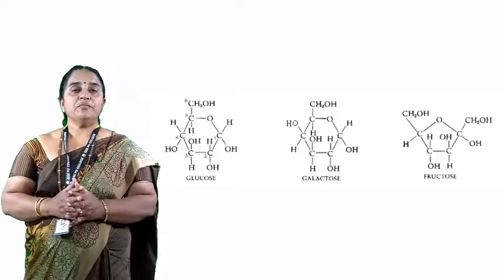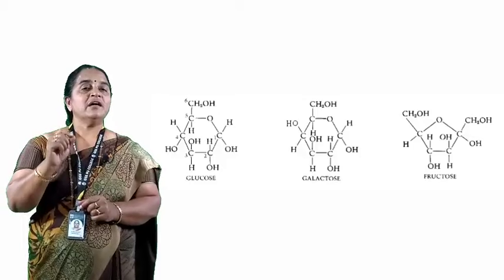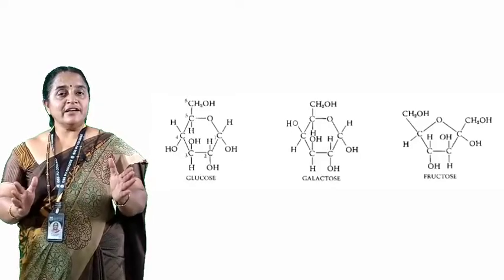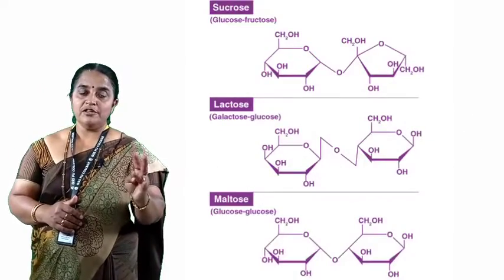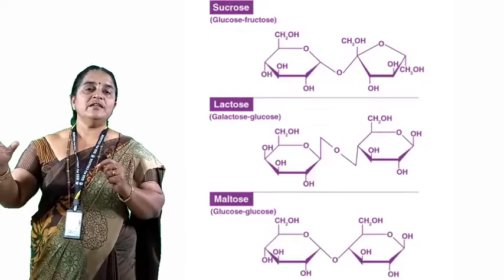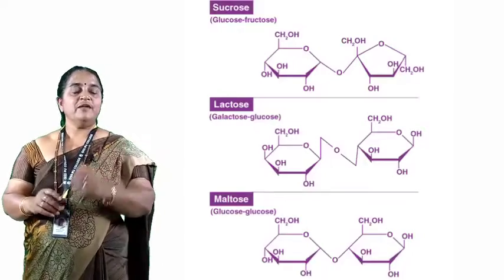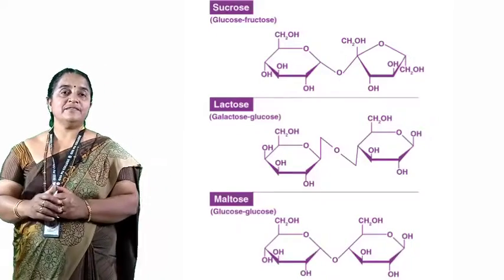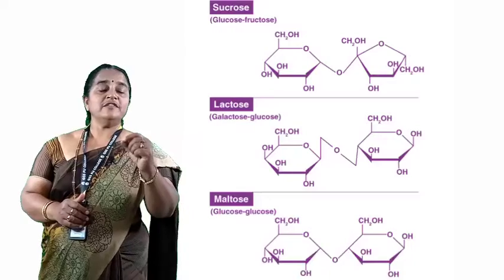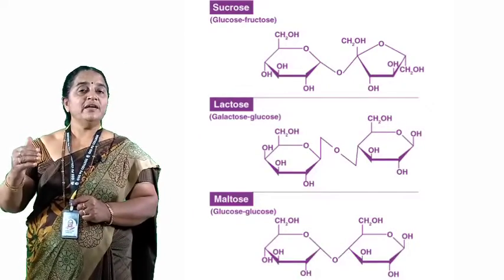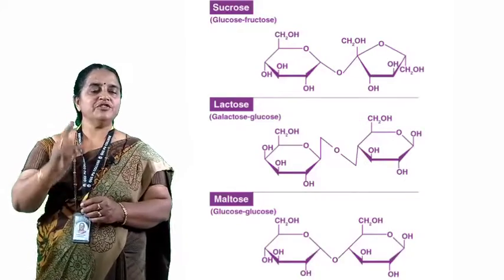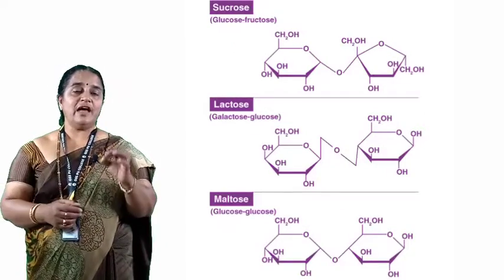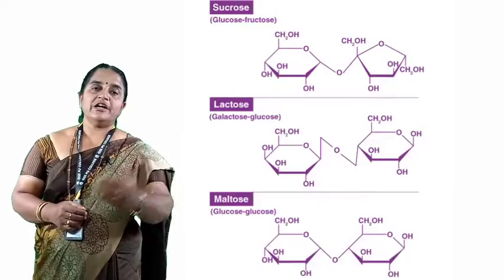Coming to the second group, monosaccharides are linked by a glycosidic bond, eliminating a water molecule. Commonly available disaccharides are sucrose, maltose, and lactose. Sucrose is usually found in plant cells — for example, sugarcane. Maltose is present in all cereals and millets, and lactose is found in milk. Sucrose comprises glucose and fructose; maltose comprises two glucose molecules; and lactose is composed of glucose and galactose.